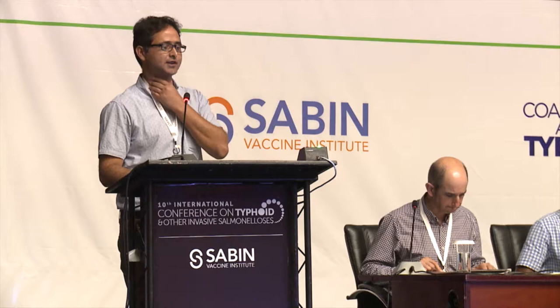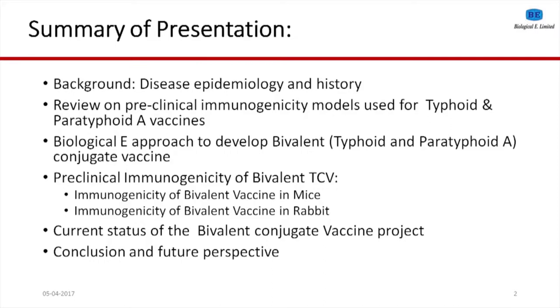The outline of my presentation: I will start with a short background. We had a lot of excellent presentations yesterday and today on the epidemiology, history, and other things, so I will not take much time on that. There will be a quick review on what proof of concept has been established for the VI and O2-based vaccines. I will also speak about the biological approach and how we have developed the bivalent vaccine, followed by data from mice and rabbit models, and the current status of the project.